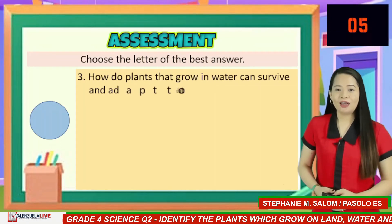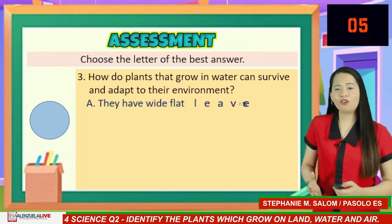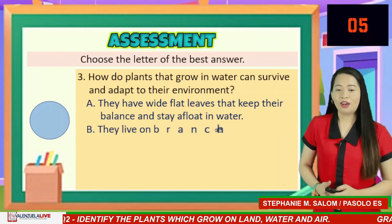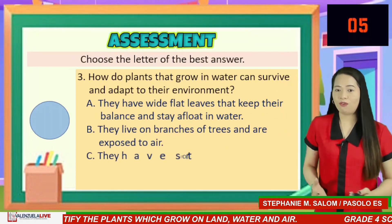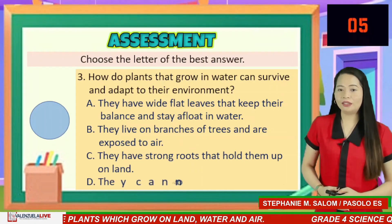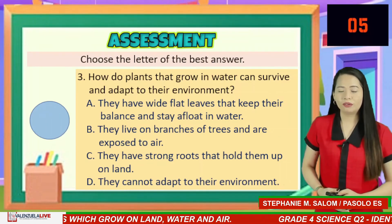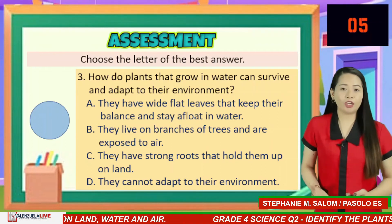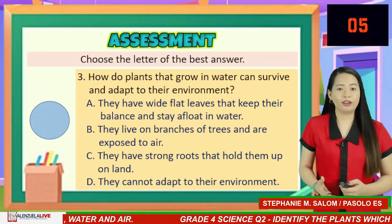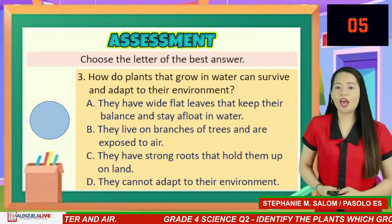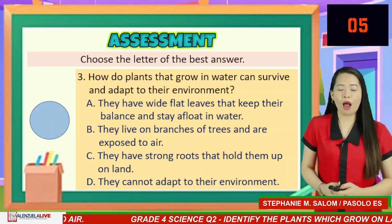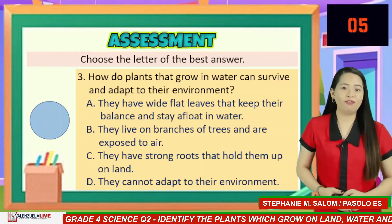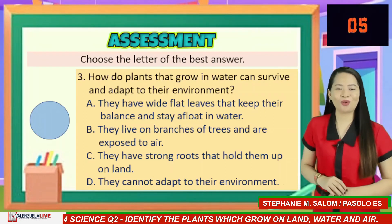Number 3: How do plants that grow in water survive and adapt to their environment? A. They have wide flat leaves that keep their balance and stay afloat in water. B. They live on branches of trees and are exposed to air. C. They have strong roots that hold them up on land. D. They cannot adapt to their environment. You have five seconds to answer.